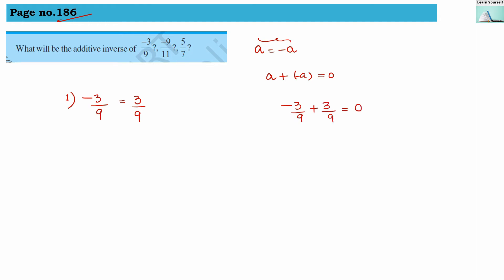When they add up to zero, they are termed as additive inverses. The second: additive inverse of minus 9 by 11 is 9 by 11. The third: additive inverse of 5 by 7 is minus 5 by 7.